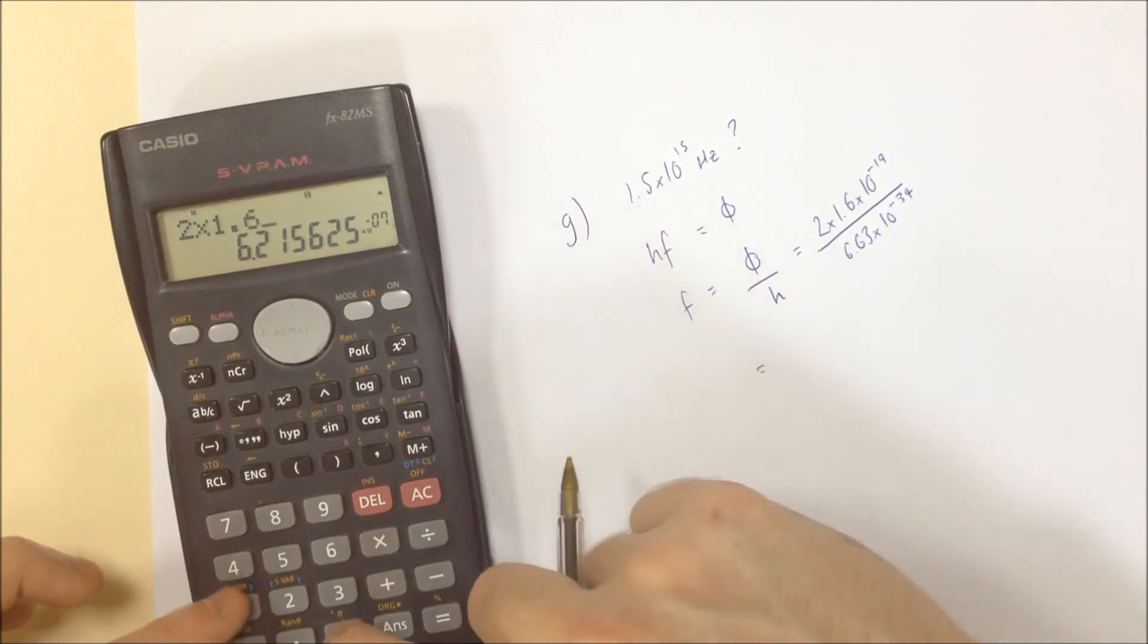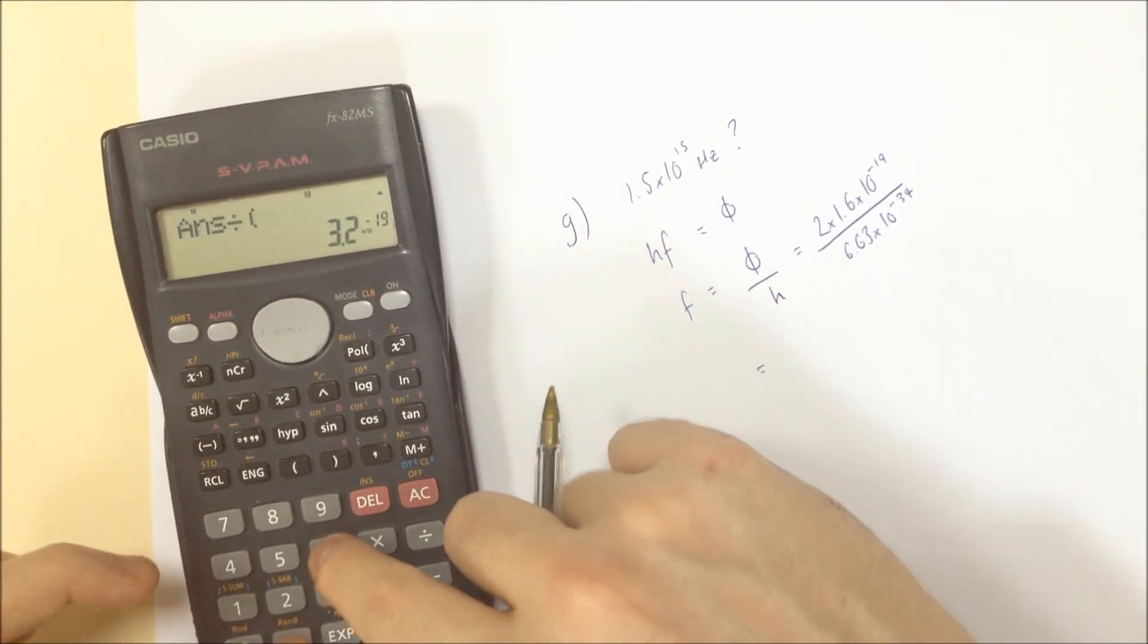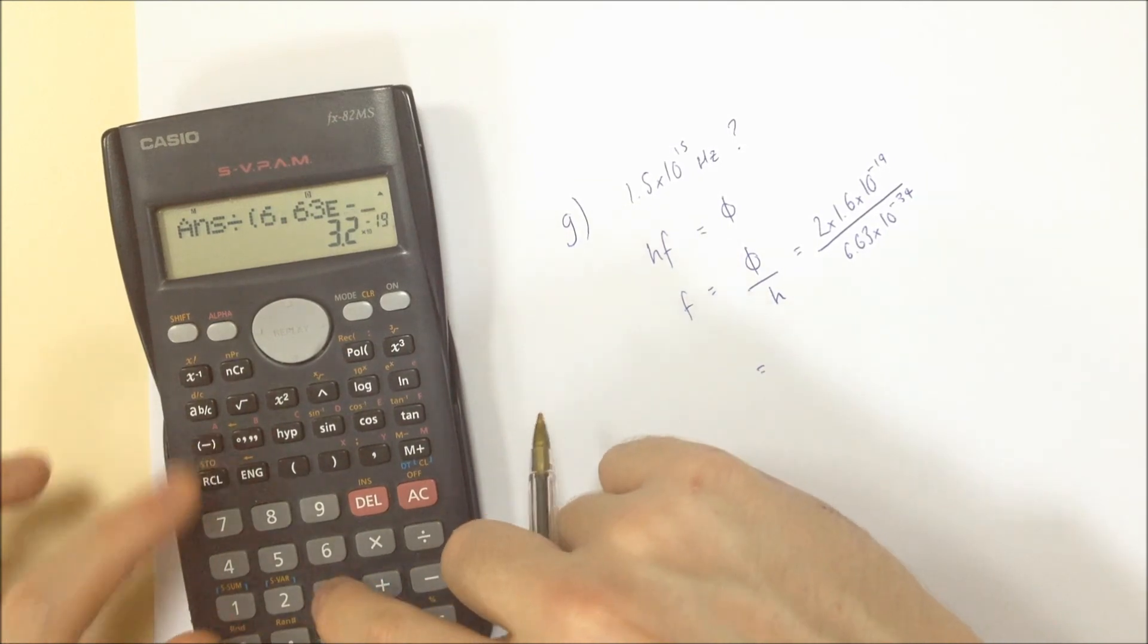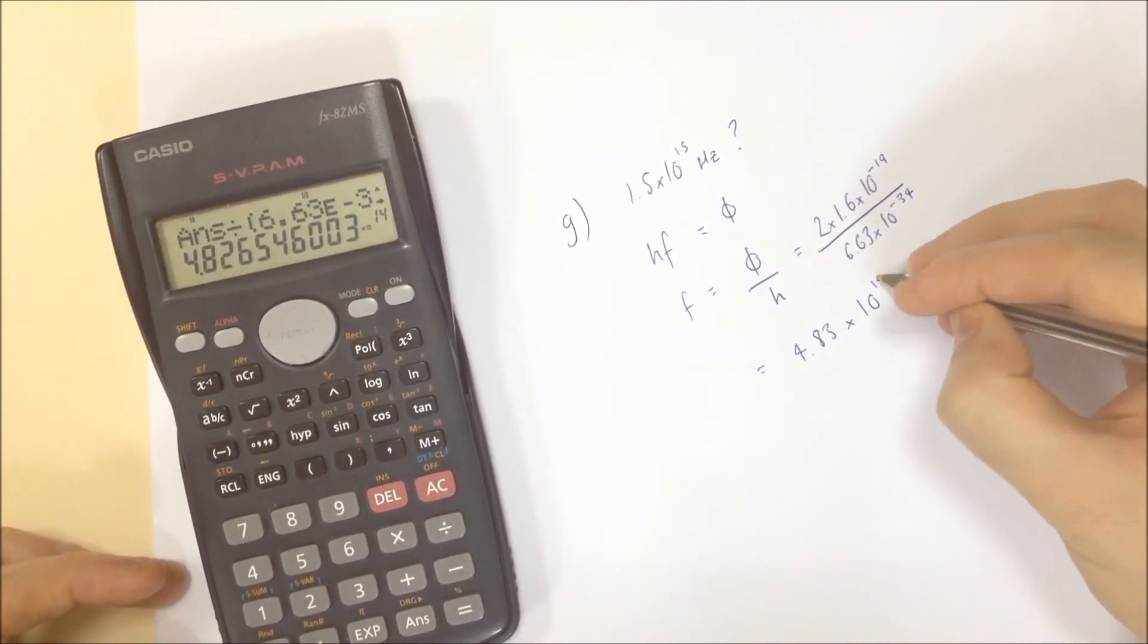So 2 times 1.6 times 10 to the minus 19. Divided by 6.63 times 10 to the minus 34. Gives me a value of 4.83 times 10 to the 14 hertz.